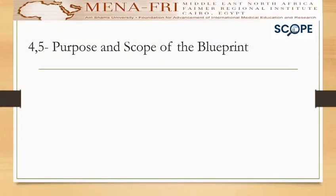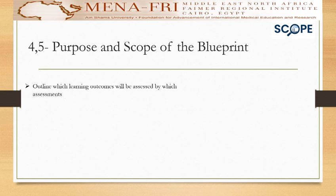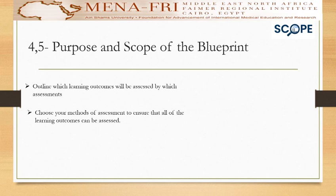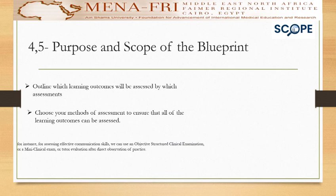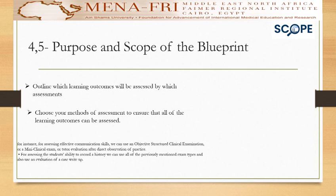For step four and five, the purpose and scope of the blueprint is done by outlining which learning outcomes will be assessed and by which assessment method, to ensure that all learning outcomes can be assessed. For assessing effective communication skills, we can use an Objective Structured Clinical Examination (OSCE), a mini clinical exam, or tutor evaluation through direct observation of practice. For assessing a student's ability to record history, we can use all of the previously mentioned exam types and also an evaluation of a case write-up.